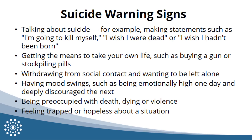Warning signs aren't always obvious, and they may vary from person to person. Some people make their intentions clear, while others keep suicidal thoughts and feelings secret. Some warning signs may include, but are not limited to, talking about suicide — for example, making statements such as 'I'm going to kill myself,' 'I wish I were dead,' or 'I wish I hadn't been born.' Getting the means to take your own life, such as buying a gun or stockpiling pills. Withdrawing from social contact and wanting to be left alone. Having mood swings, such as being emotionally high one day and deeply discouraged the next. Being preoccupied with death, dying or violence, or feeling trapped or hopeless about a situation.